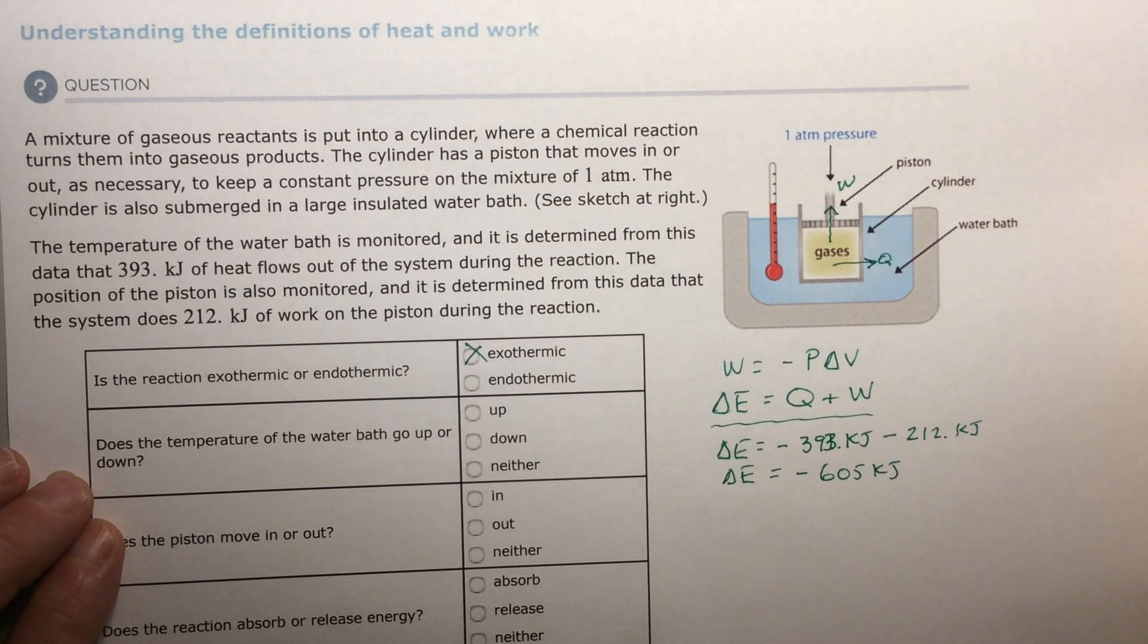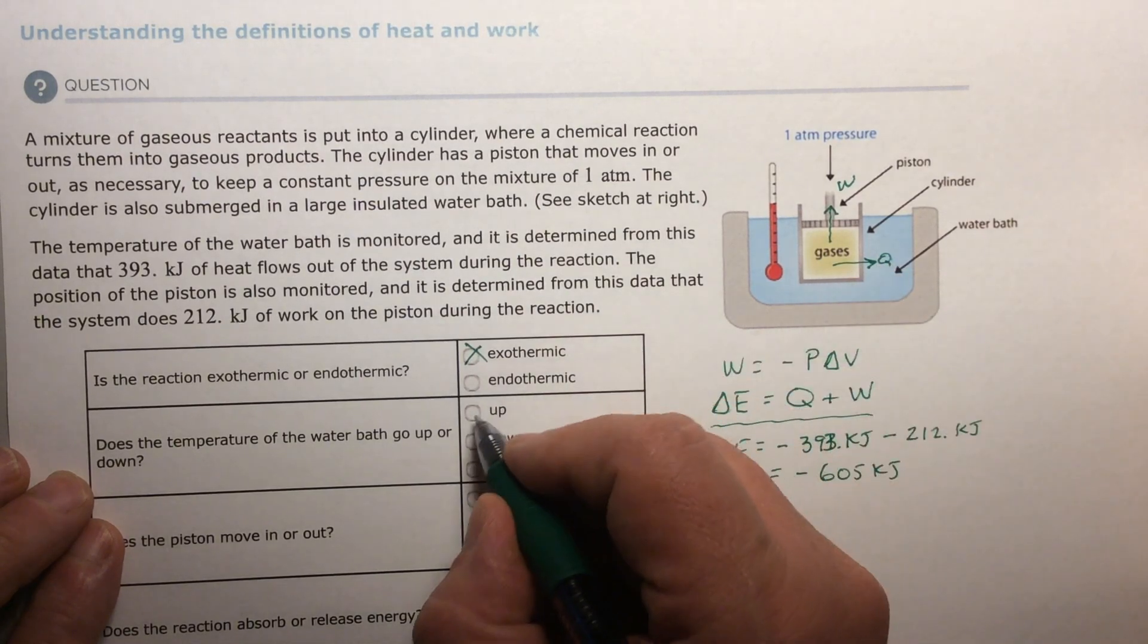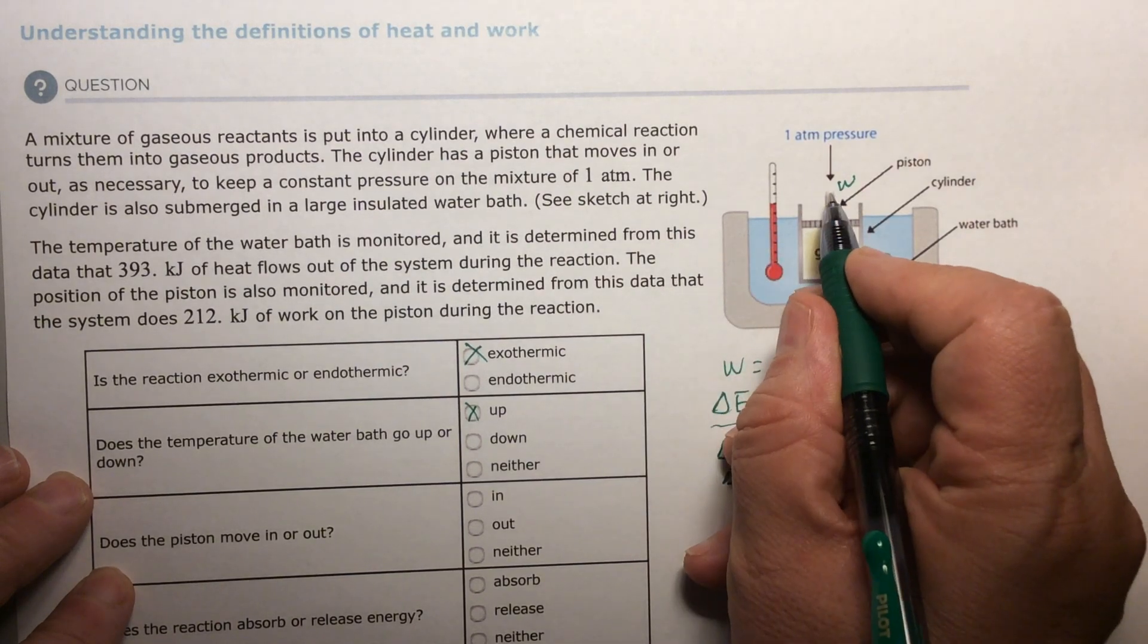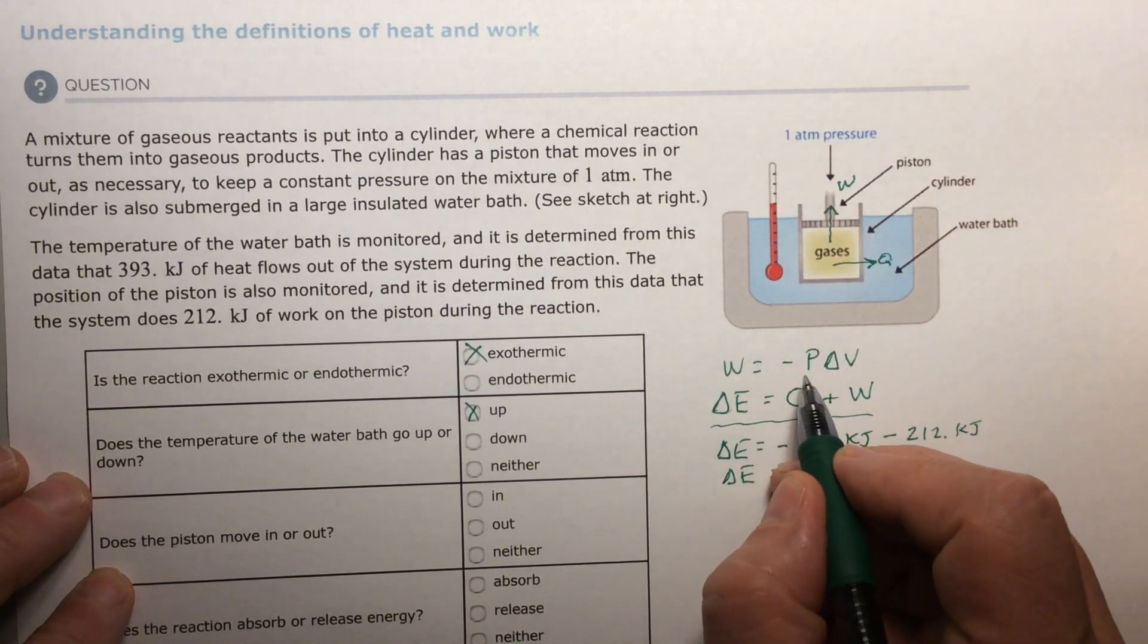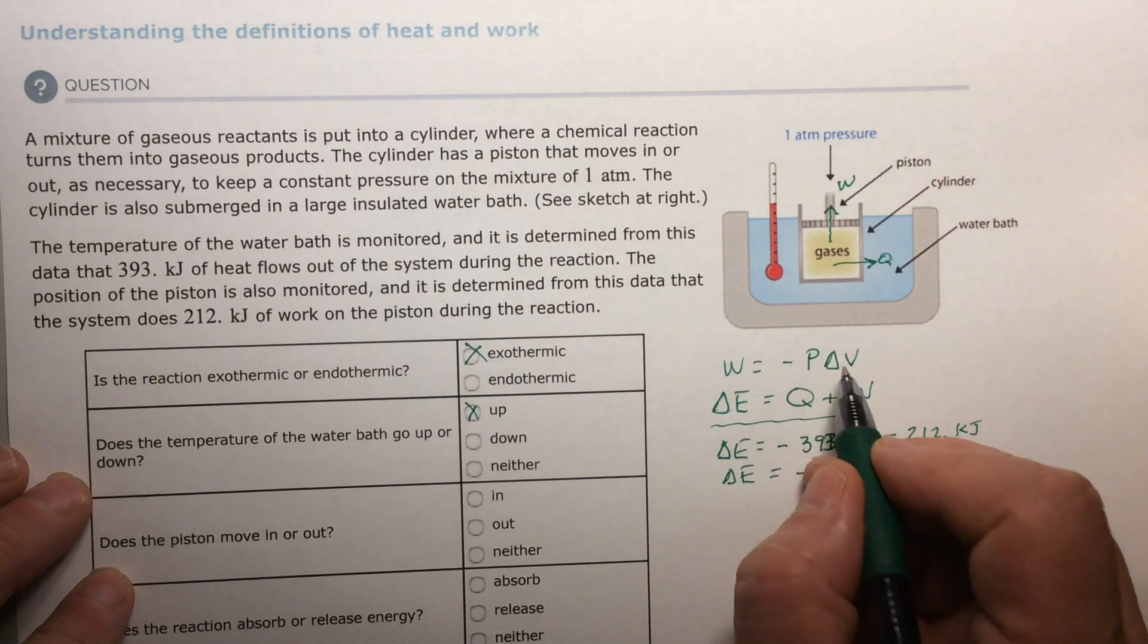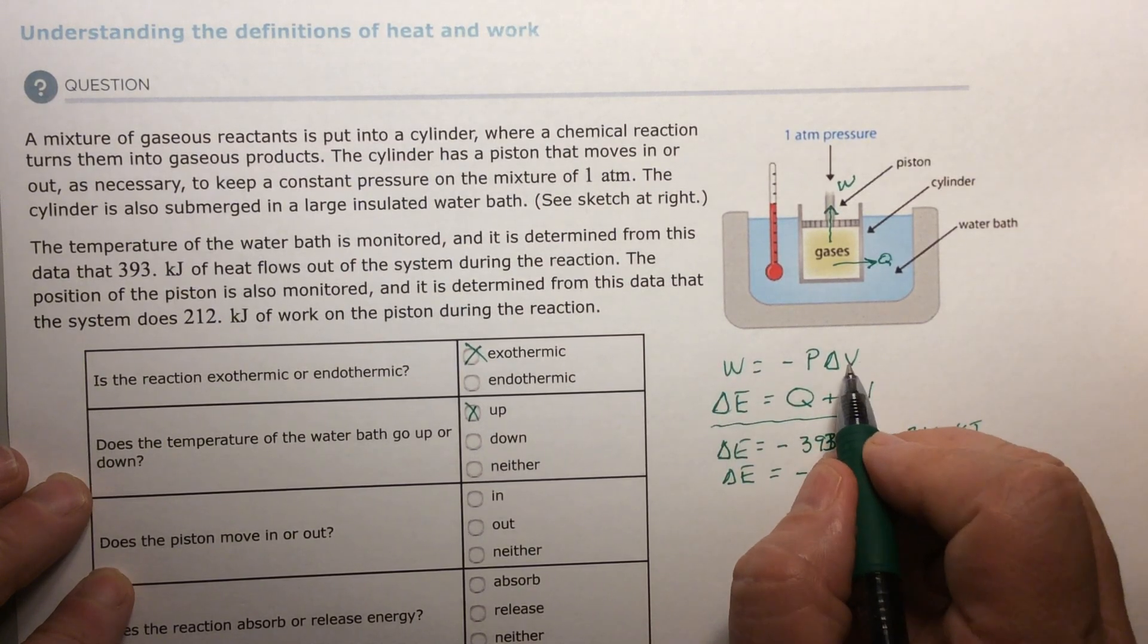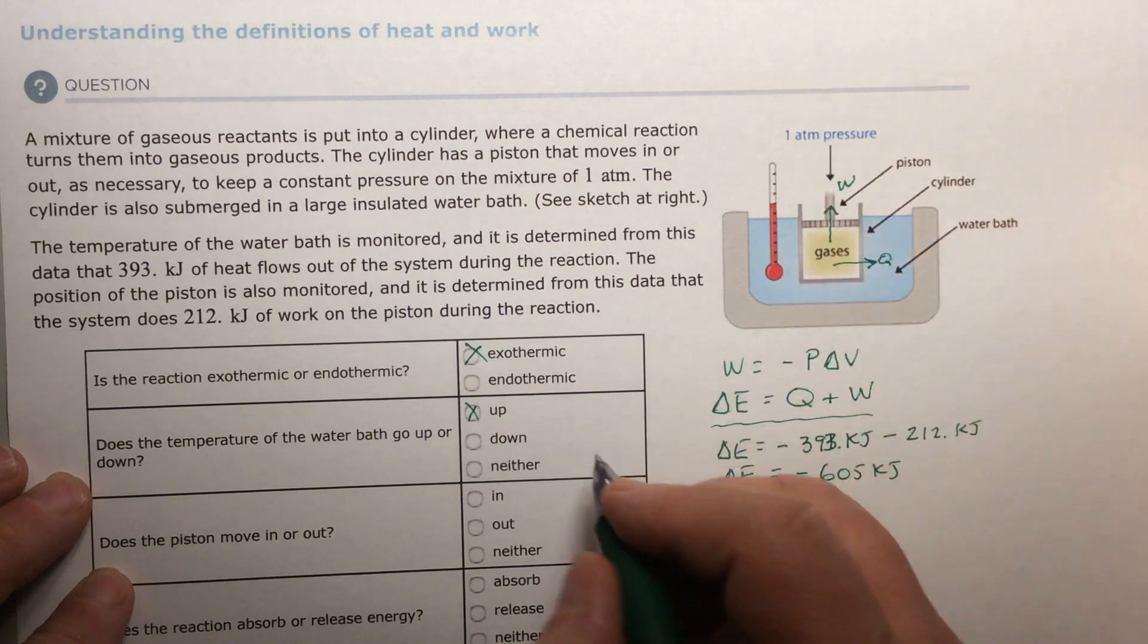Second question. Does the temperature of the water bath go up or down? If I'm putting heat into the water, it's going to go up. Does the piston move in or out? The atmosphere is constant, but if it does work on the system, then the only way that it can do work on the system is the volume gets bigger. Because if your pressure is constant, the only other thing that would cause something to make work would be that I would have a bigger volume. The gases are expanding and pushing it out.